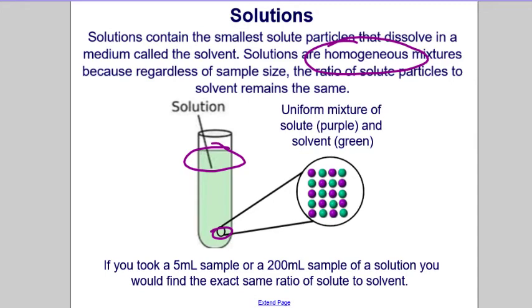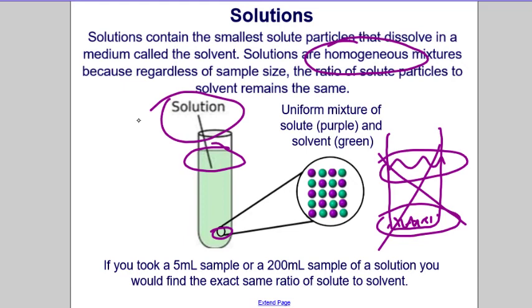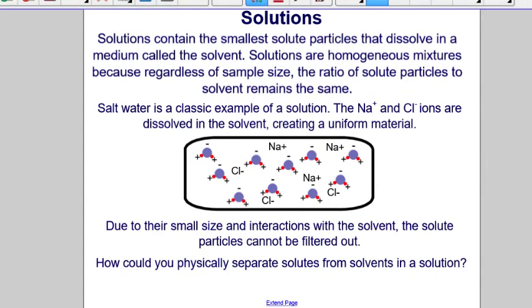This is different from a suspension like sand and water, where the sand settles to the bottom, making the concentration of sand higher at the bottom than at the top — not homogeneous. Salt water is a classic example of a solution: the sodium and chloride ions are dissolved in the solvent, creating a uniform material. Due to their small size and interactions with the solvent, the solute particles cannot be filtered out.